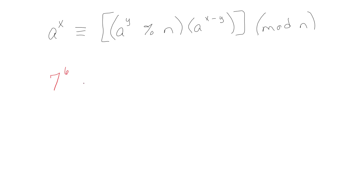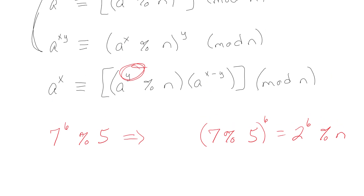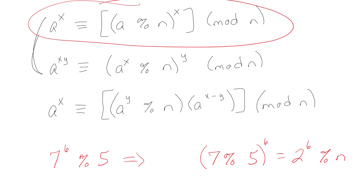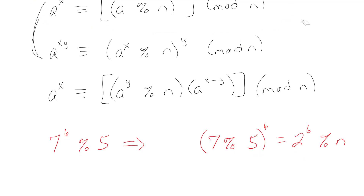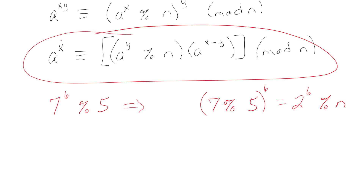Let's say you wanted to get seven to the sixth mod five. What you do is first simplify the base: compute seven mod five, which gives you two. So now instead of seven to the sixth mod five, you have two to the sixth. But now you need to mod-in that again. The idea is here you can simplify the base first, and then continue from there.